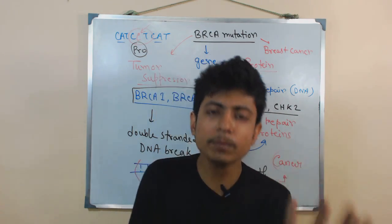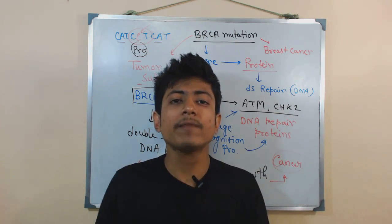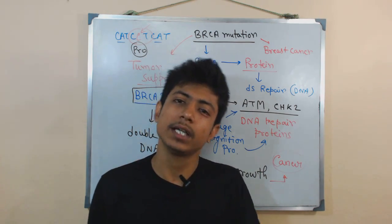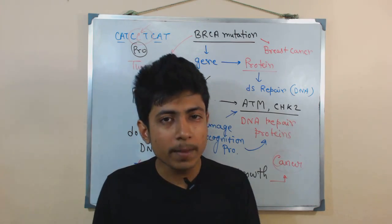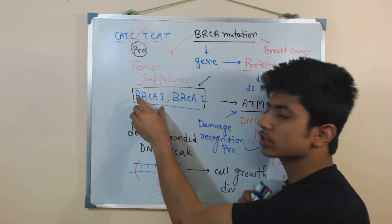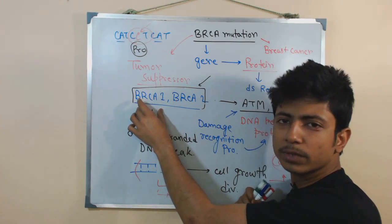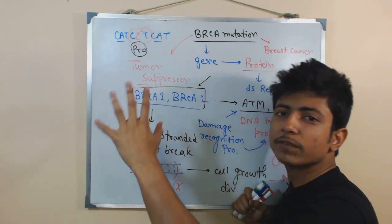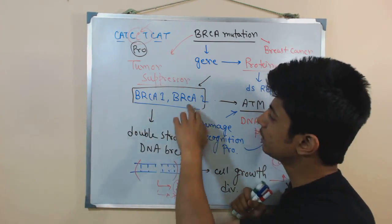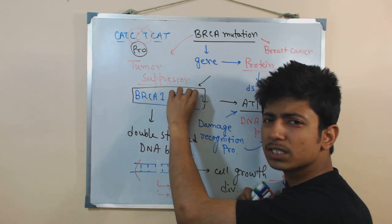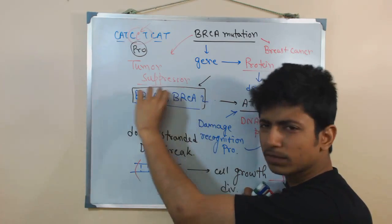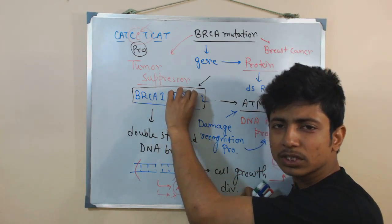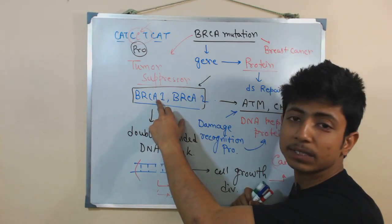For example, if you have a mutation in BRCA1, you have five times more chance of having cancer at a later stage in life compared to another person. This is more significant for women — a woman with a BRCA1 mutation has five times more chance of getting cancer between the ages of sixty and seventy-five. BRCA2 mutation is rarer than BRCA1, and the chances of getting cancer from a BRCA2 mutation are somewhat less than from a BRCA1 mutation.